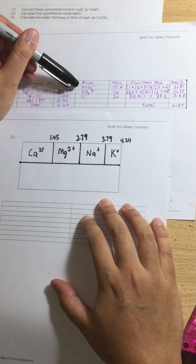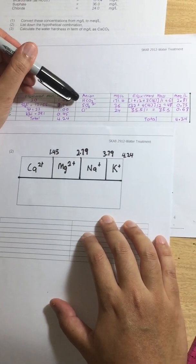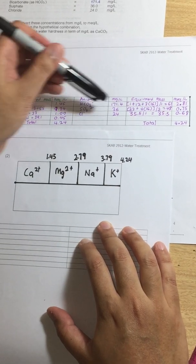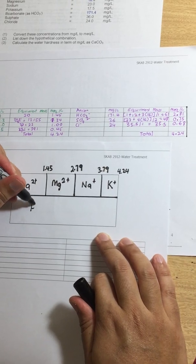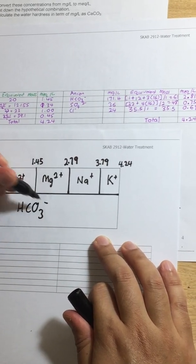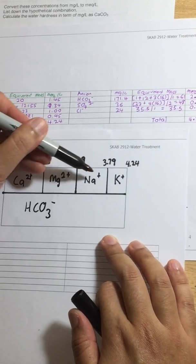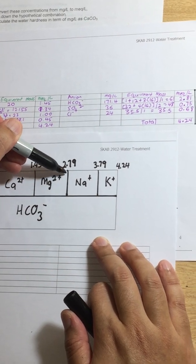So if you look at this table, the first cation is bicarbonate. The concentration is 2.81. So we just write down the carbonate symbol like that. And if you look at this diagram, 2.79 is here.